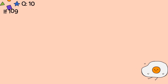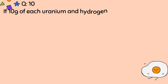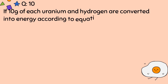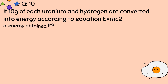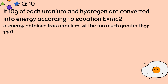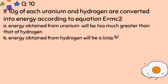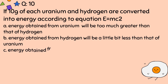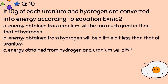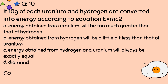Question number 10. If 10 grams each of uranium and hydrogen are converted into energy according to the equation E = mc². A. Energy obtained from uranium will be much greater than that of hydrogen. B. Energy obtained from hydrogen will be a little bit less than that of uranium. C. Energy obtained from hydrogen and uranium will always be exactly equal. Correct option is C.